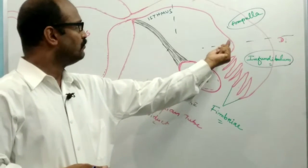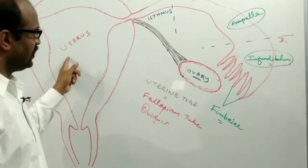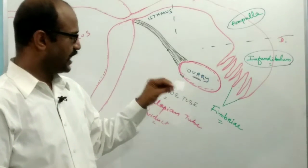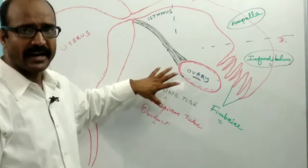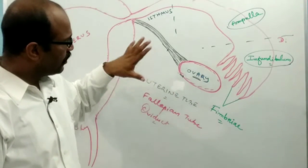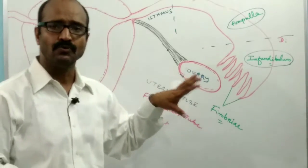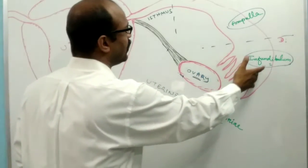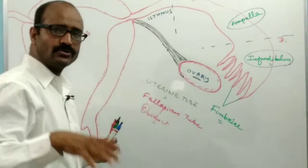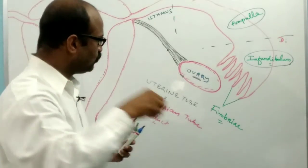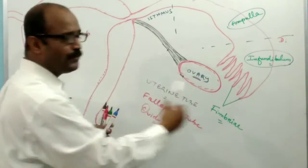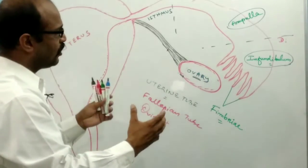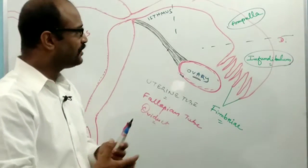The ovulated oocyte enters into the fallopian tube and moves towards the uterus. Most of the secondary oocytes are released into the peritoneal cavity, and inside the peritoneal cavity most oocytes are lost. But some of the oocytes are captured by the fallopian tube through specific movements.